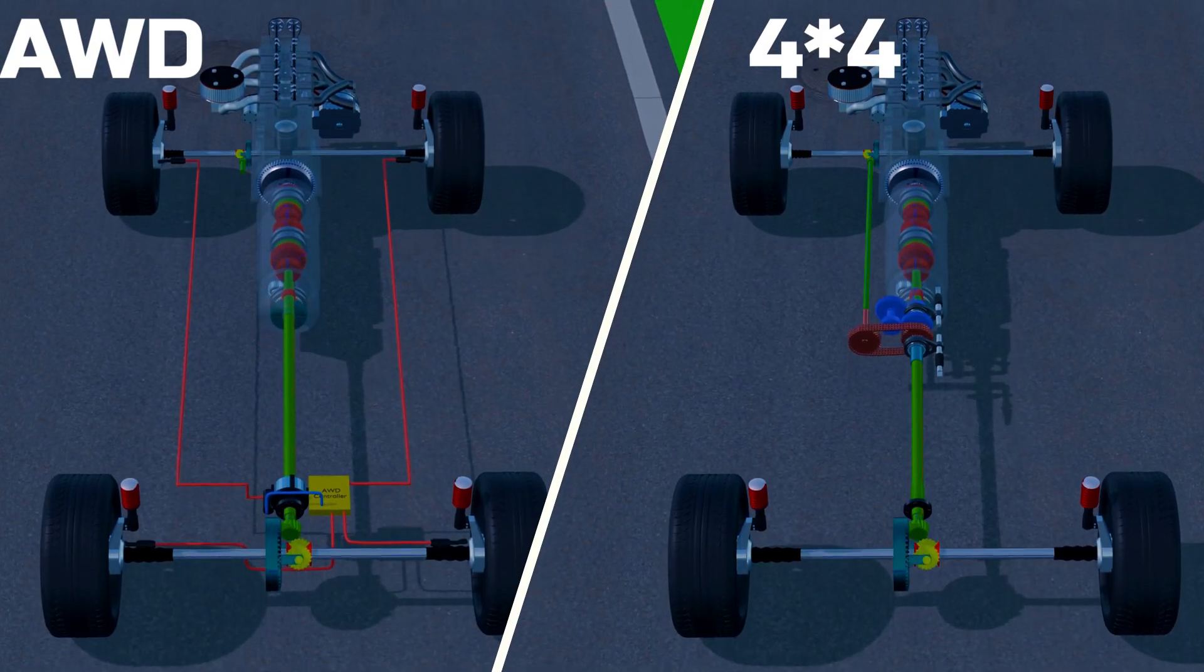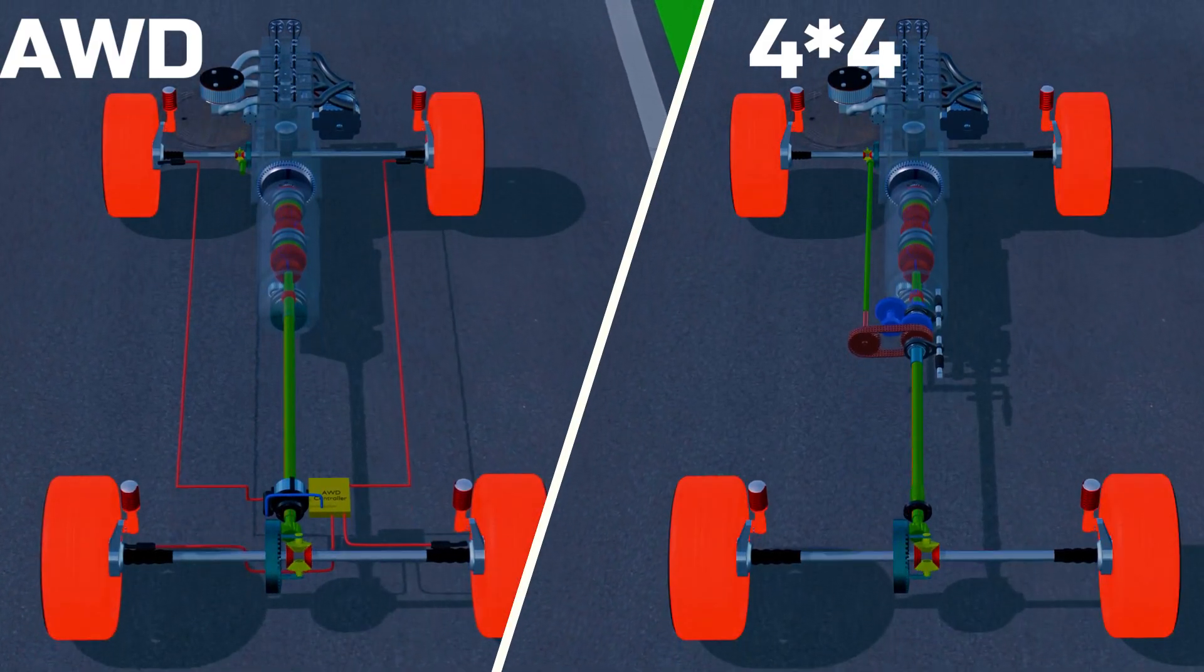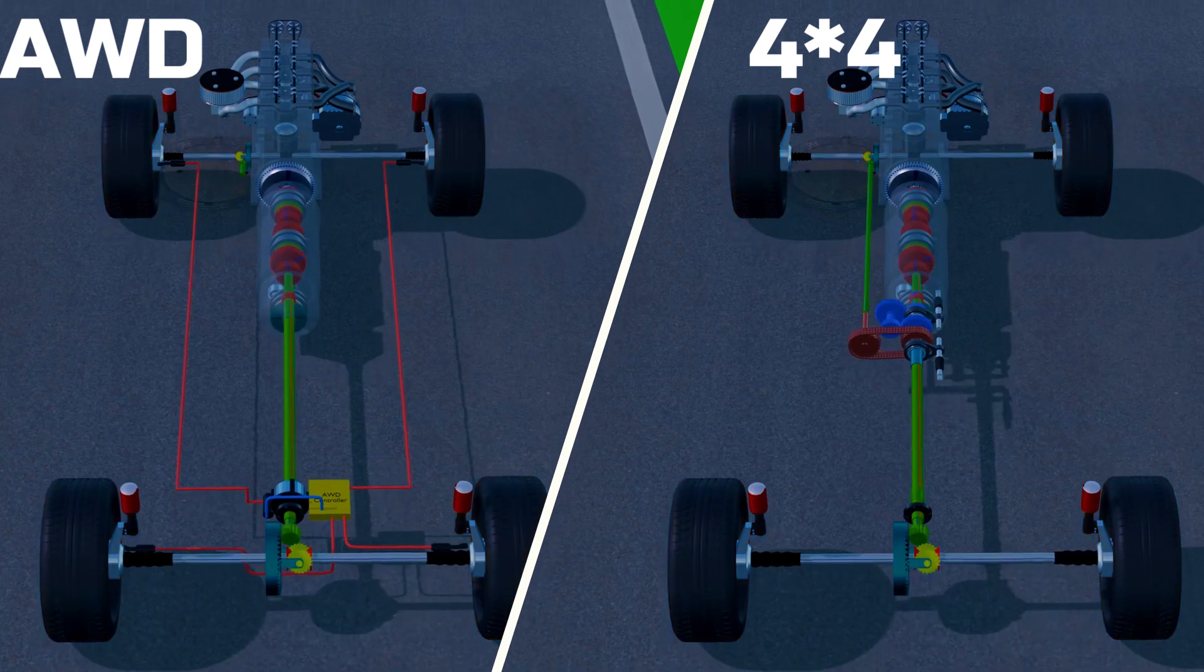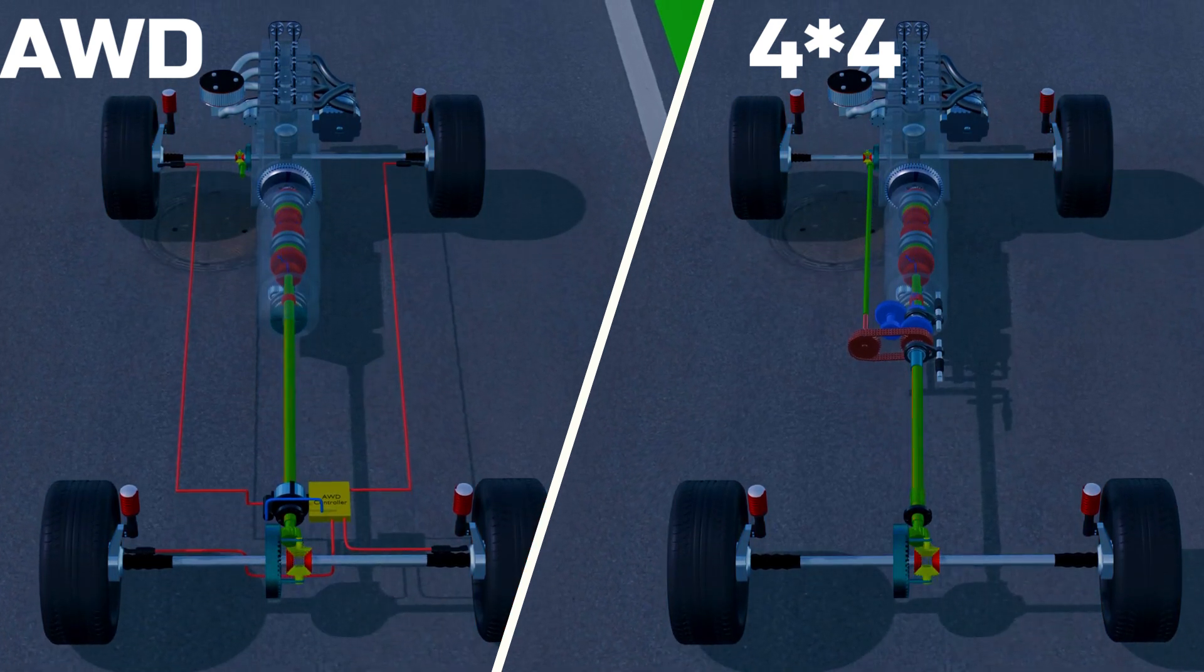In both 4x4 and all-wheel drive systems, engine power is transmitted to all four wheels, but the way it's done and the purpose behind each is quite different.